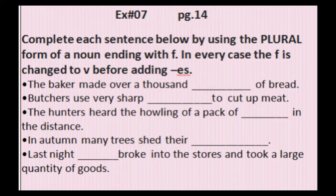First sentence: 'The baker made over a thousand dash of bread.' What is the plural for bread portions? It's loaf — so the answer is loaves. The baker made over a thousand loaves of bread.